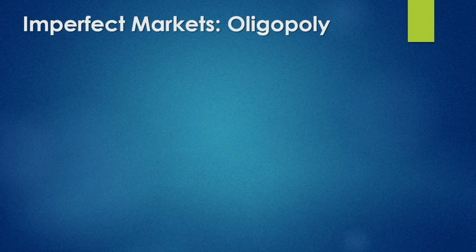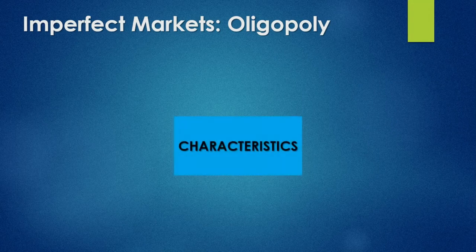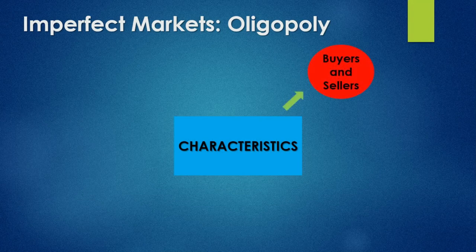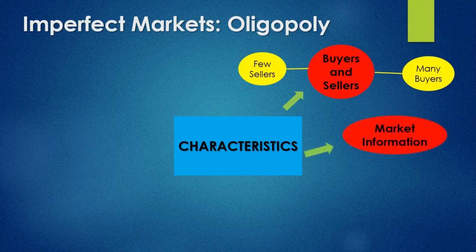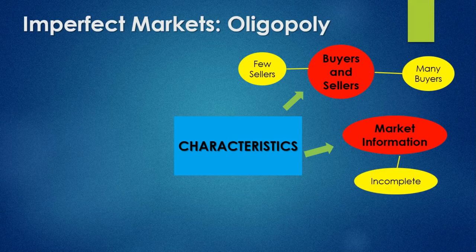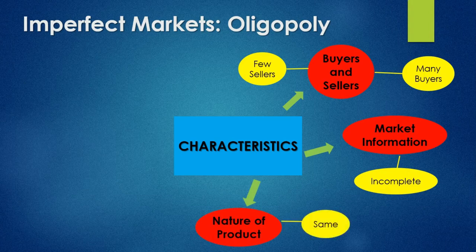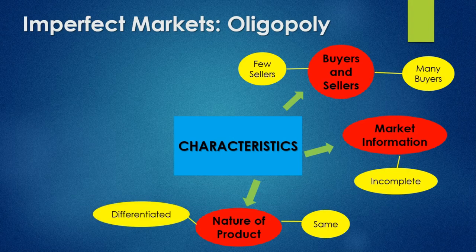We then move on to an oligopoly — where we have a few businesses which dominate the market. Looking at what makes up this market: the number of buyers and sellers — we have few sellers and many buyers, so a few businesses dominate the market and many people are willing to buy their product. Market information is incomplete, meaning they don't know all of the trends that are occurring; they take it as it comes. The nature of the product: they sell the same product as competitors, or differentiated products — meaning very similar but still different.